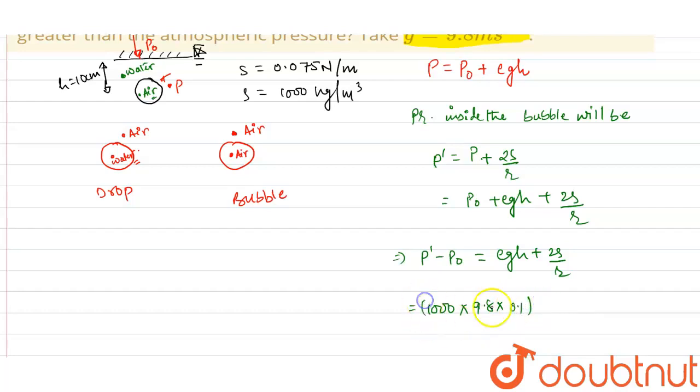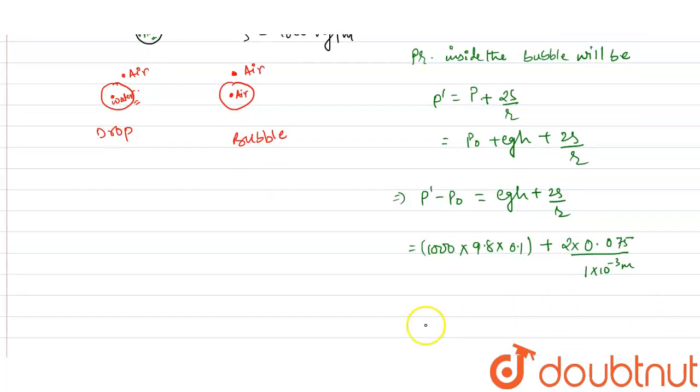Plus 2S/r, so 2 times surface tension which is 0.075 N/m, and r is 1 × 10⁻³ meters. Now calculating this, we get 1130 pascals. P' - P₀ = 1130 Pa. So this is our required answer.